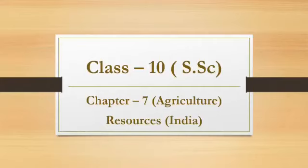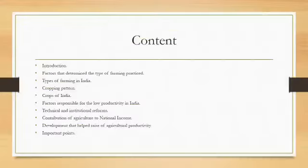In this video we will learn about the agriculture of India, social science for class 10 students, from the geography portion. Content includes: introduction, factors that determine the type of farming practiced, types of farming in India, cropping patterns, crops of India, factors responsible for low productivity, technical and institutional reforms, contribution of agriculture to national income, developments that helped raise agricultural productivity, and some important concluding points.